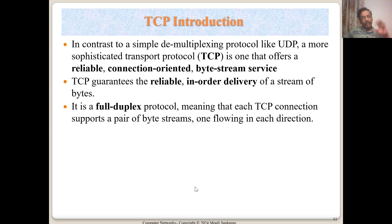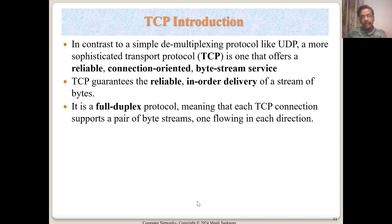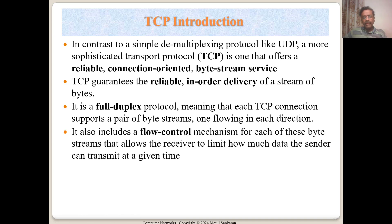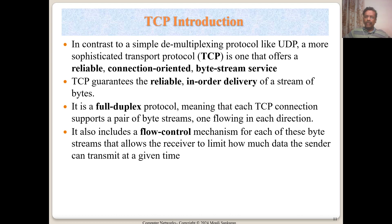A practical example of flow control: when your network connection is poor — due to rain, cable issues, or routers being down — the quality of a video stream drops automatically. The dots per inch or frame rate reduces so you can still receive the live stream, just at lower quality. This is flow control: managing the speed of data flow based on what the network and receiver can handle.